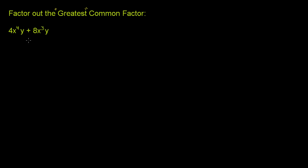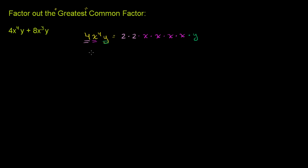If we were to factor out 4x to the fourth y, it would look like this. We do the prime factorization of 4, which is just 2 times 2, times x to the fourth — which is x times x times x times x — times y. We've just expanded it out as a product of its basic constituents.